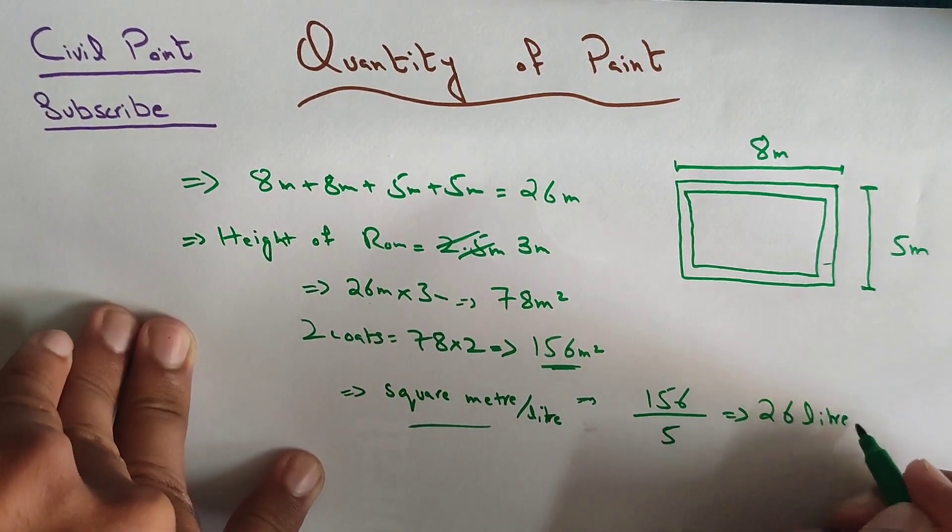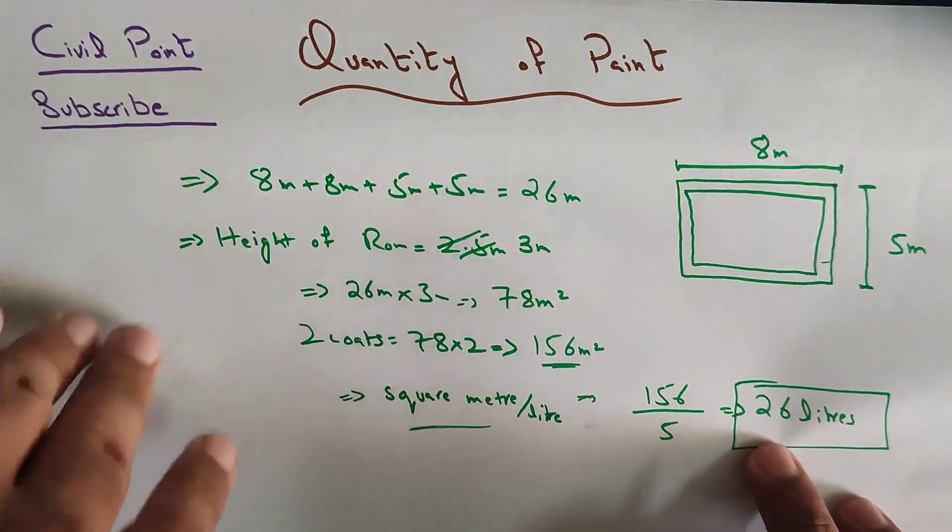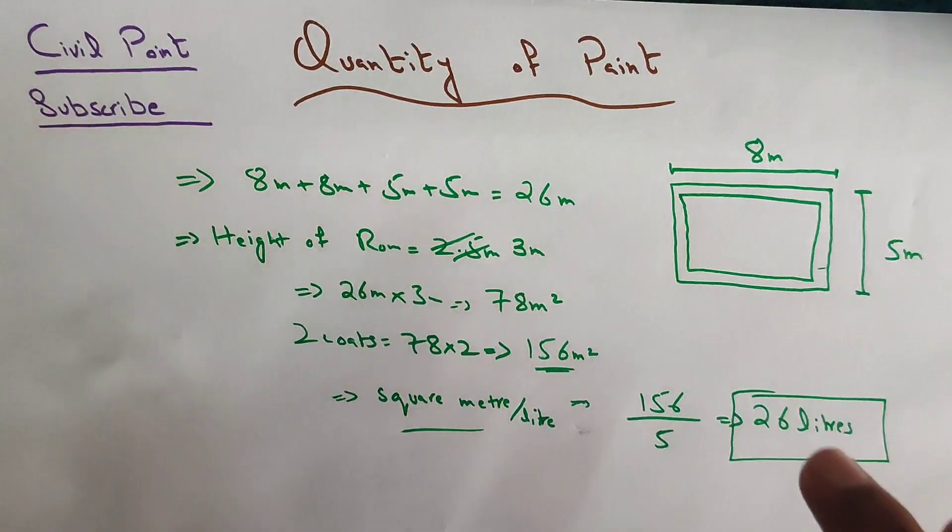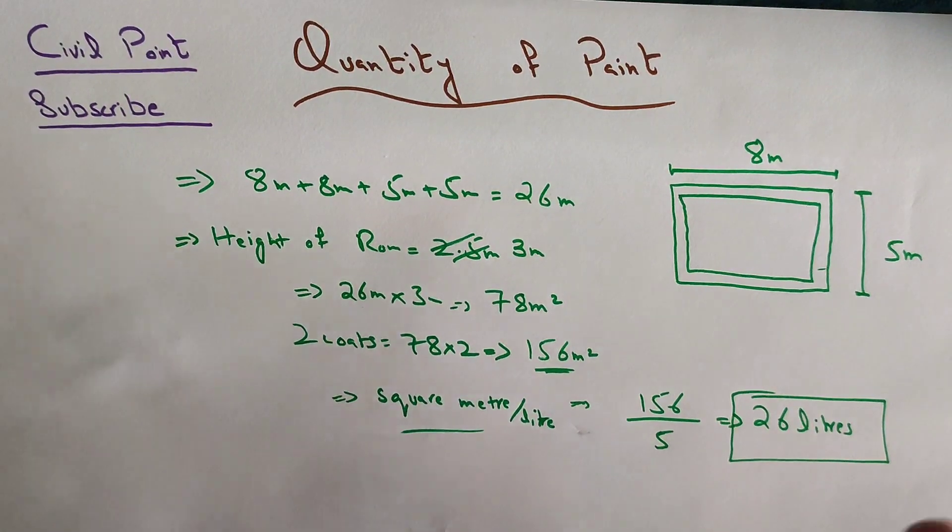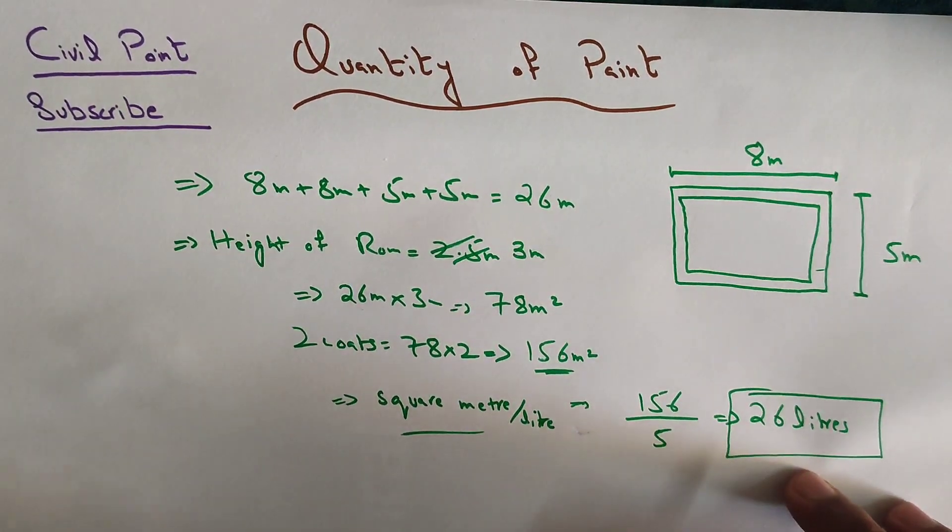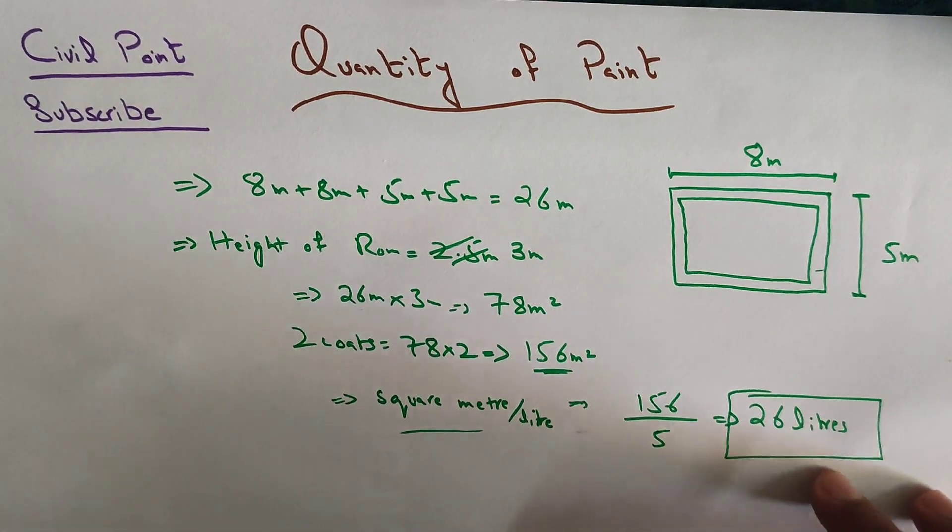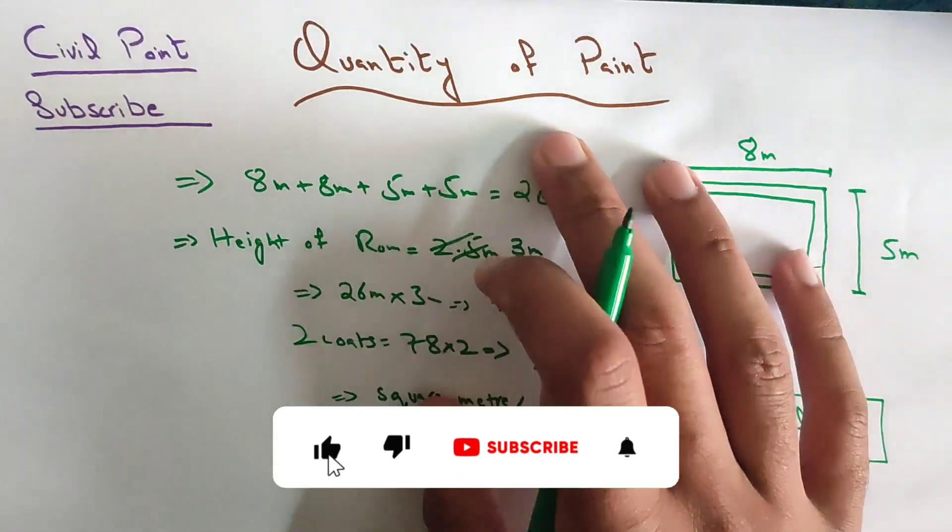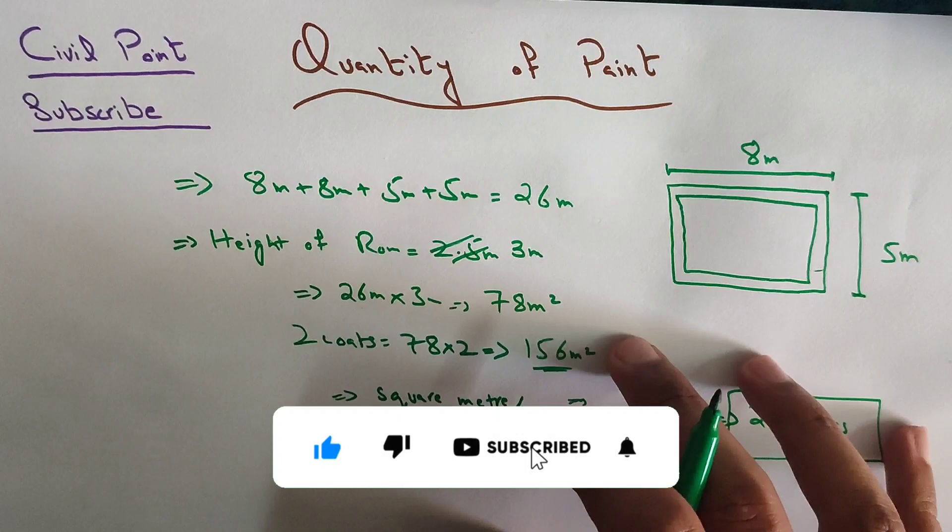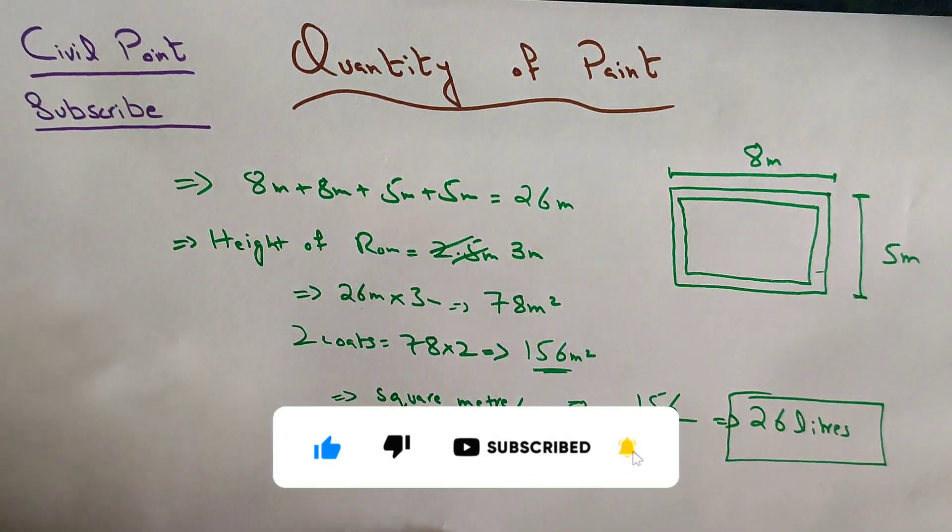So it means that 26 liters of paint will be used for this room, and you will order the quantity of paint accordingly. This was a simple formula for the quantity of paint. If you find this helpful, kindly subscribe to our channel Civil Point. Thank you.